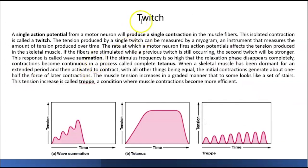We need a nerve to make a muscle move, but all the stimulus that a nerve is going to produce needs certain strength in order to achieve that. Sometimes the amount, just barely, the amount of a stimulus will produce a twitch. The twitch doesn't perform any type of work, but it is a contraction.